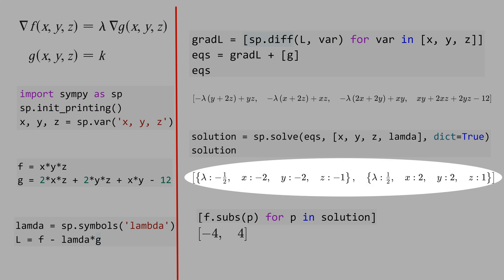And we have two solutions, one for lambda minus half, and the other solution for lambda equal half. If you plug these values of x, y, and z in the function f, we get minus 4, that is the minimum.